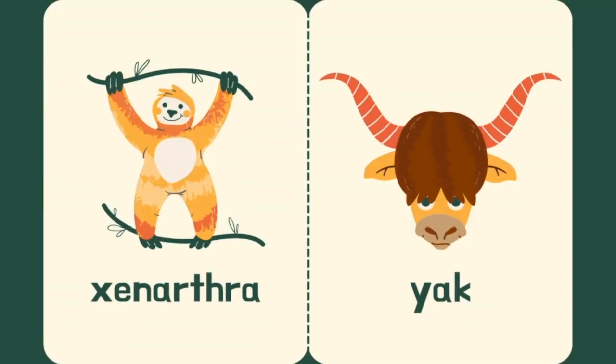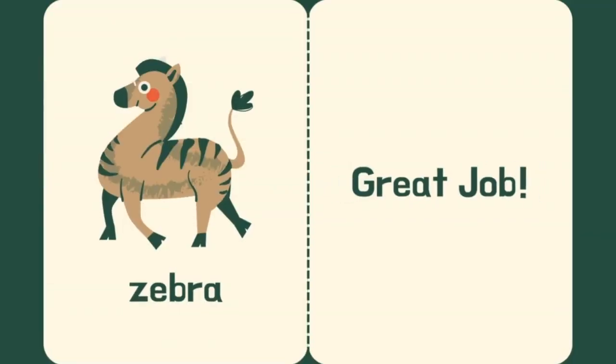X is for Zenatra. Y is for Yak. Z is for Zebra. Great job!